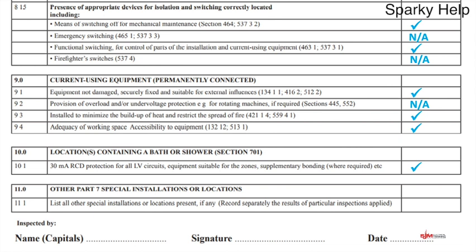Other Part 7 special locations — anything else from the special locations section, such as saunas, swimming pools, agricultural installations, and solar panels. If you've got any of those others within the installation then it's going to be a tick; if you haven't got anything else apart from the bath or shower, then it will be an NA.